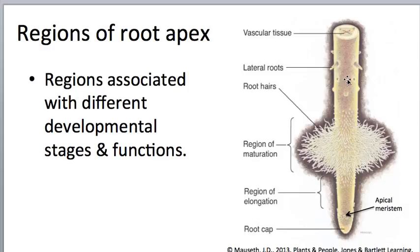The root hairs are labeled right here. Further up the root we see the formation of lateral roots, and going up even further we would see larger lateral roots coming off as well. At the very top they show a cross-section, indicating that in the very center of the root is the vascular tissue, which we'll be looking at in much more depth.